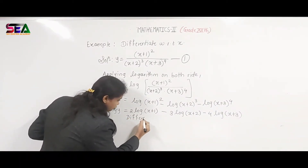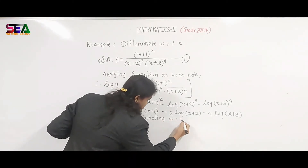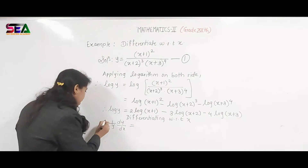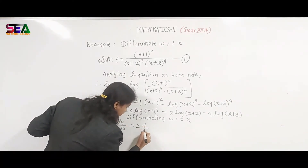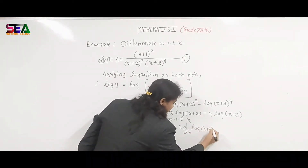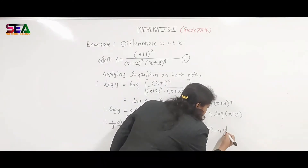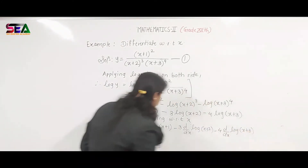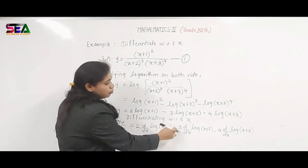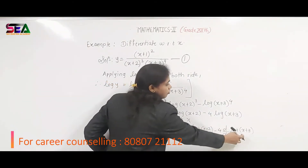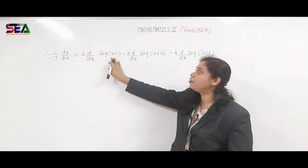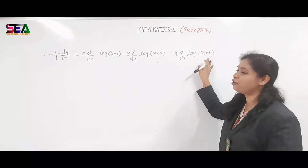Step 3: differentiating with respect to x. The derivative of log y is 1/y · dy/dx, so the LHS becomes 1/y · dy/dx. On the RHS, we differentiate: 2 times the derivative of log(x+1), minus 3 times the derivative of log(x+2), minus 4 times the derivative of log(x+3). We now have to use derivative formulae to solve these terms.